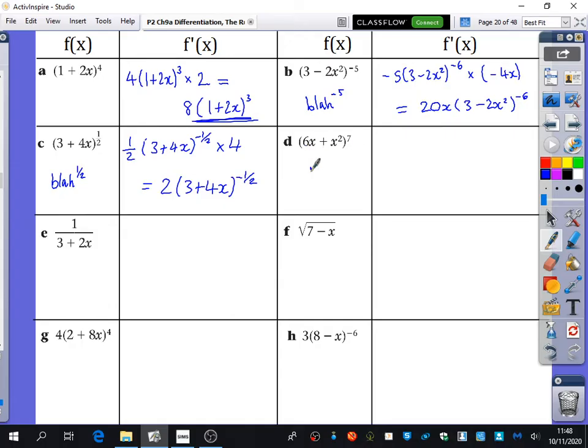Ishak, this one here is blah to the power of 7, right? What does to the power of 7 normally differentiate to? So 7 blah to the power of 6. 6 plus 2x.